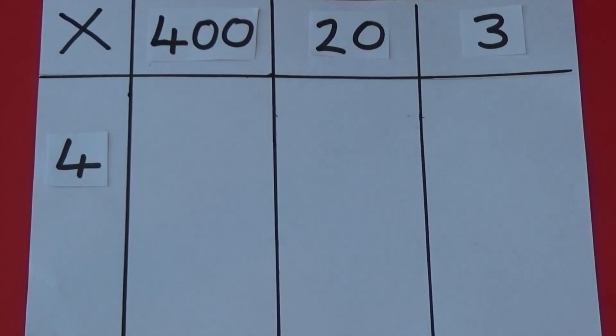I'm going to use the place value counters to help me work out 400 multiplied by 4, 20 multiplied by 4, and 3 multiplied by 4.